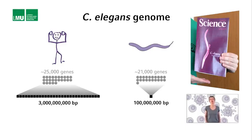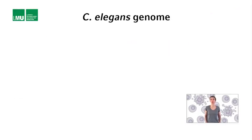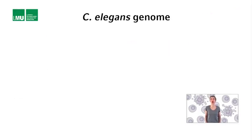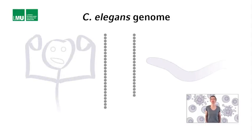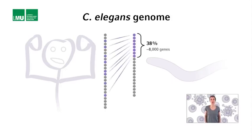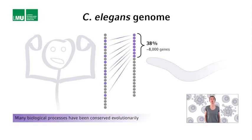How similar are the genomes of C. elegans and humans? About 38% of all C. elegans genes have orthologs in humans — that's more than one-third. This finding confirms that many biological processes have been conserved evolutionarily from at least C. elegans to humans.